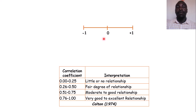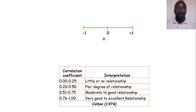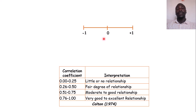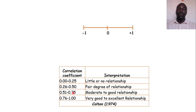We have a rule of thumb when interpreting correlation coefficients, provided by Colton in 1974. A coefficient between 0 and 0.25 indicates little or no relationship. Between 0.25 and 0.5 is a fair degree of relationship. Between 0.51 and 0.75 is a moderate to good relationship. And above 0.76 up to a maximum of one is a very good or excellent relationship.